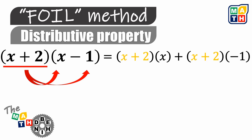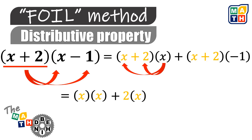Now that we have these forms, we need to apply another set of distributive property. The monomial expressions x and negative 1 will both be distributed to the binomial x plus 2. By doing that, we will have these four pairs of terms.